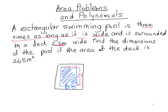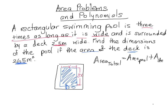So now what do we do? We know that the area of the deck is 265 meters squared — that's the part that's not shaded. Now, if you recall from when you learned about area inside a figure, in order to find a part of the area of the whole figure, we have to find the area of the total — that's everything, the pool plus the deck — which is equal to the area of the pool plus the area of the deck.